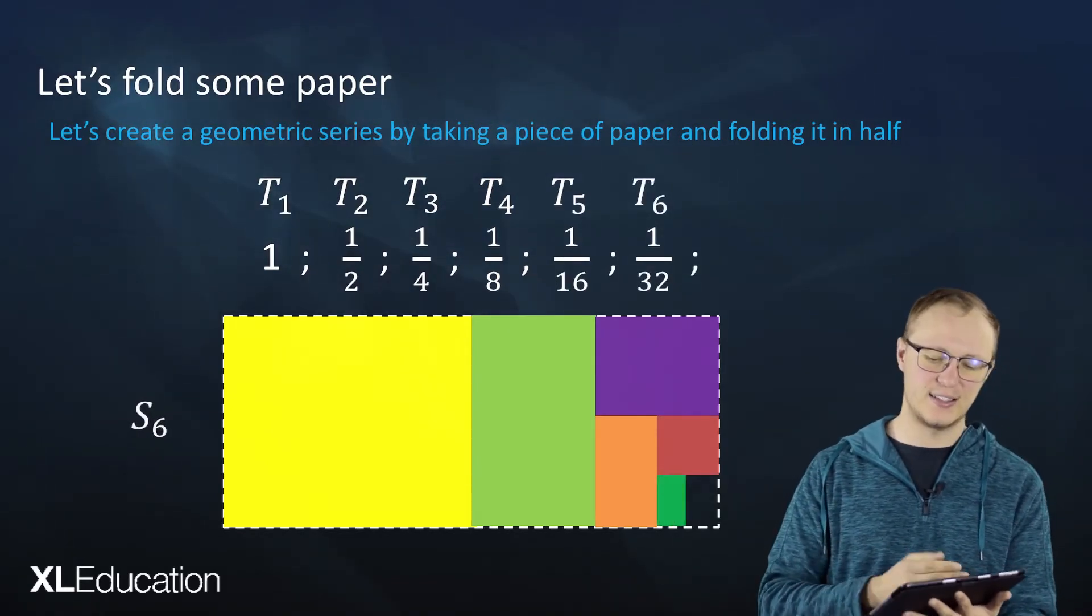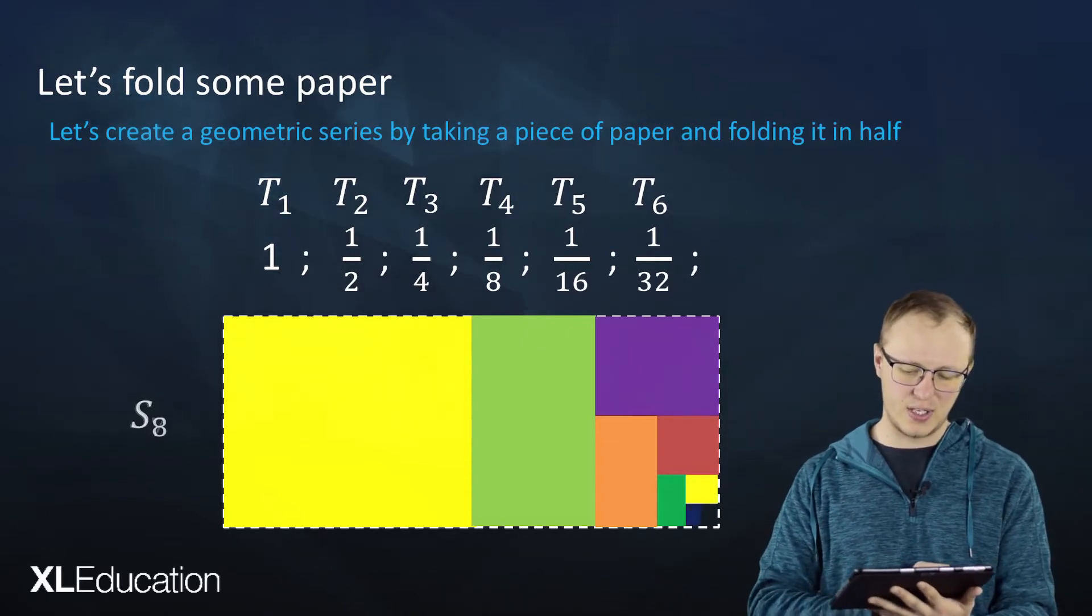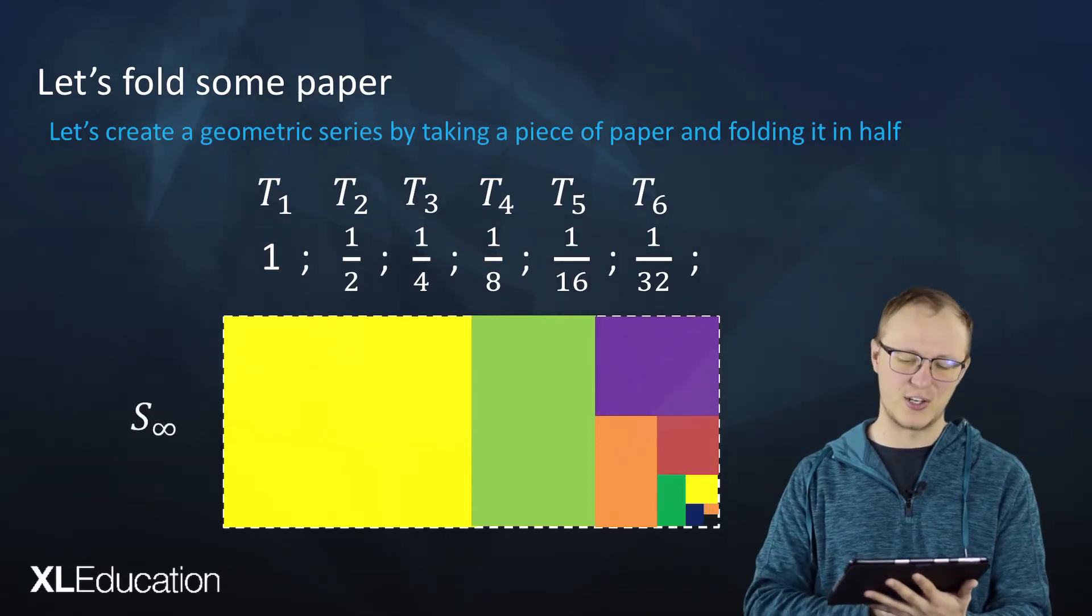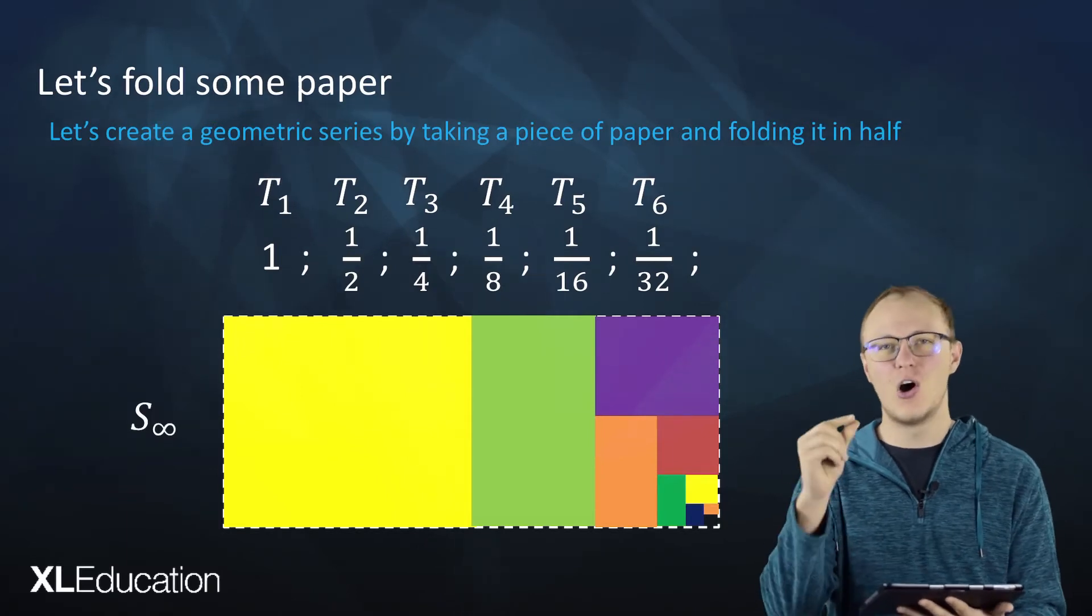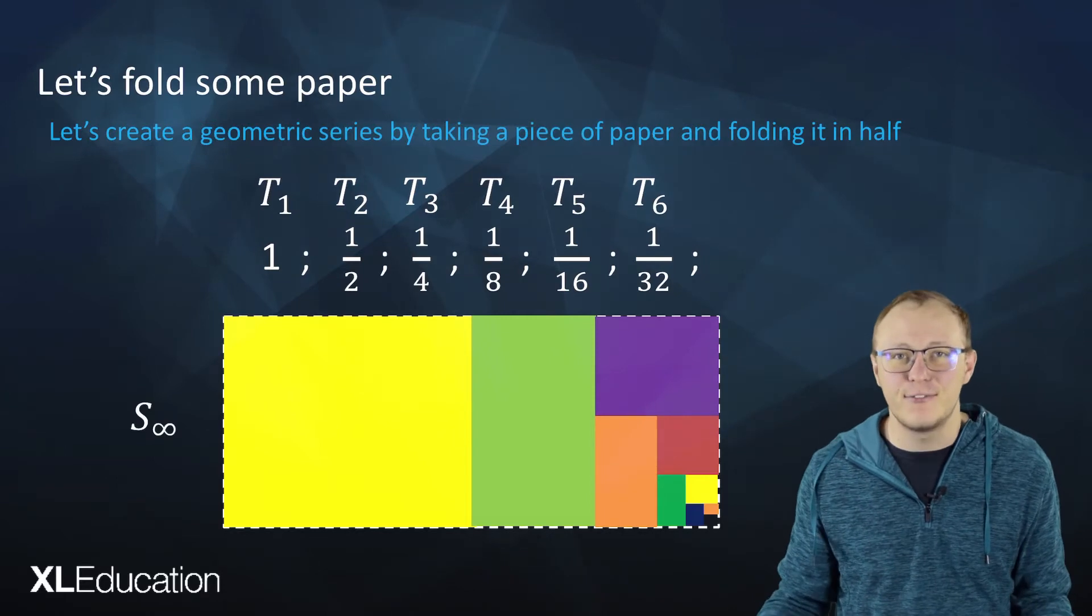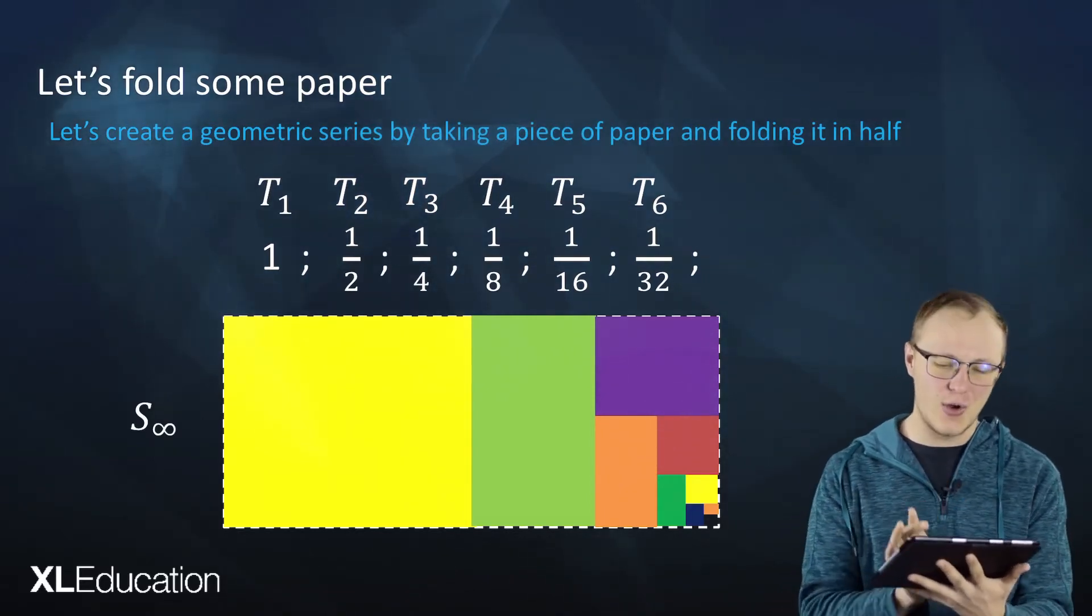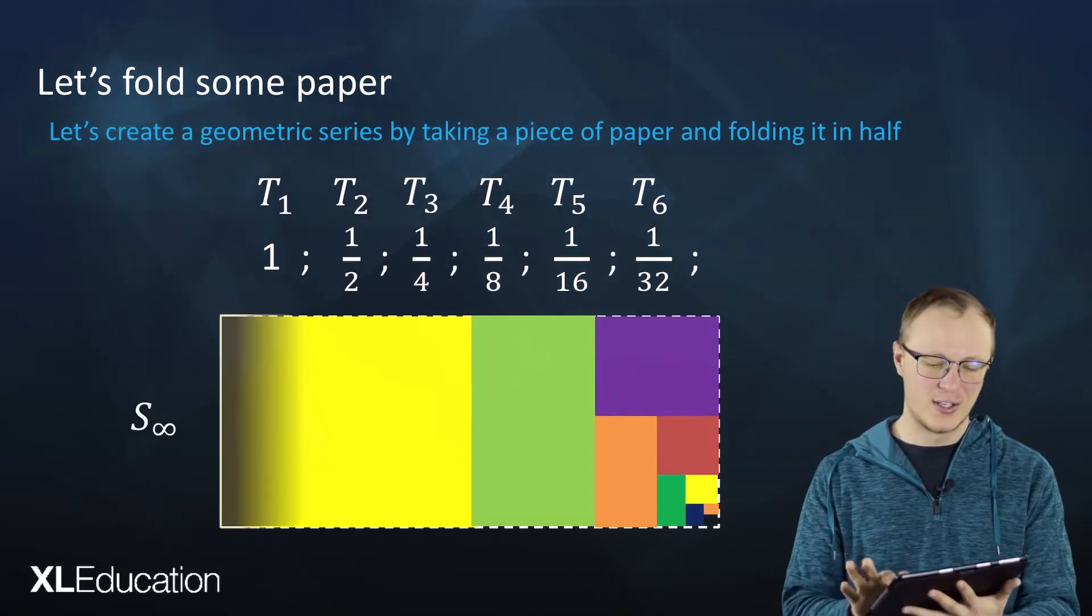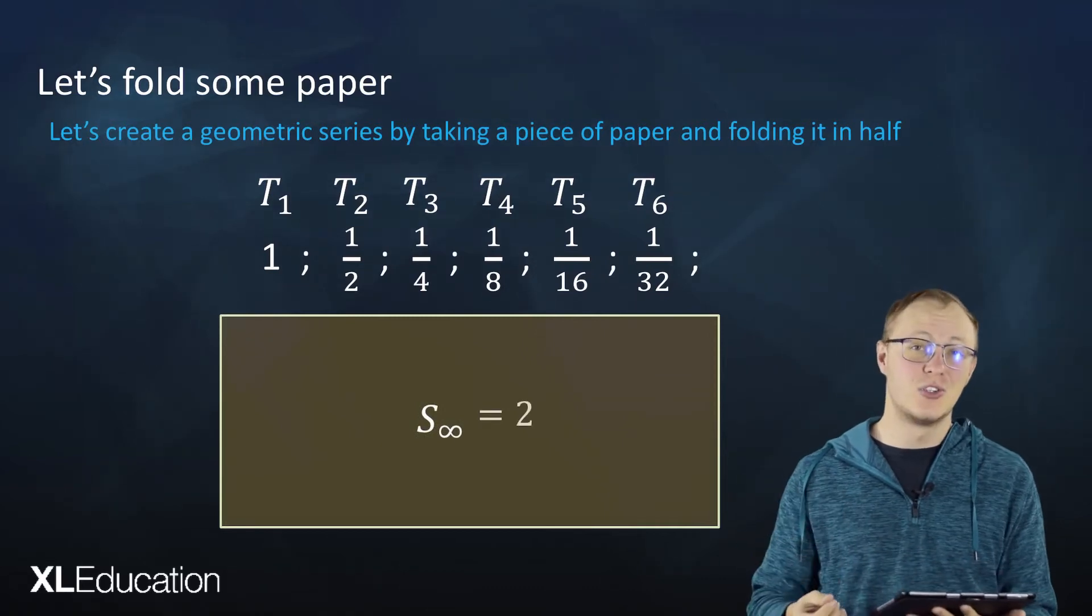And now S6 is everything you see there. Let's think: if you keep going and going, are you ever going to finish? No, because you're always only going to fill in half of that space remaining. So S infinity, if we go on forever, we're only ever going to cover that whole block. So S infinity is actually going to equal 2.